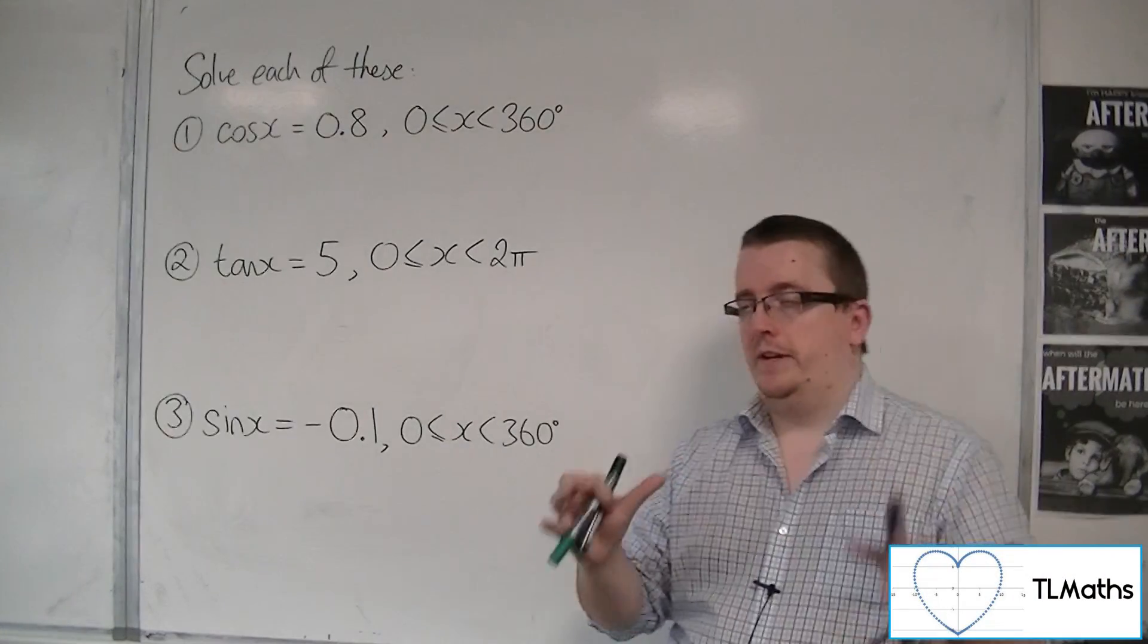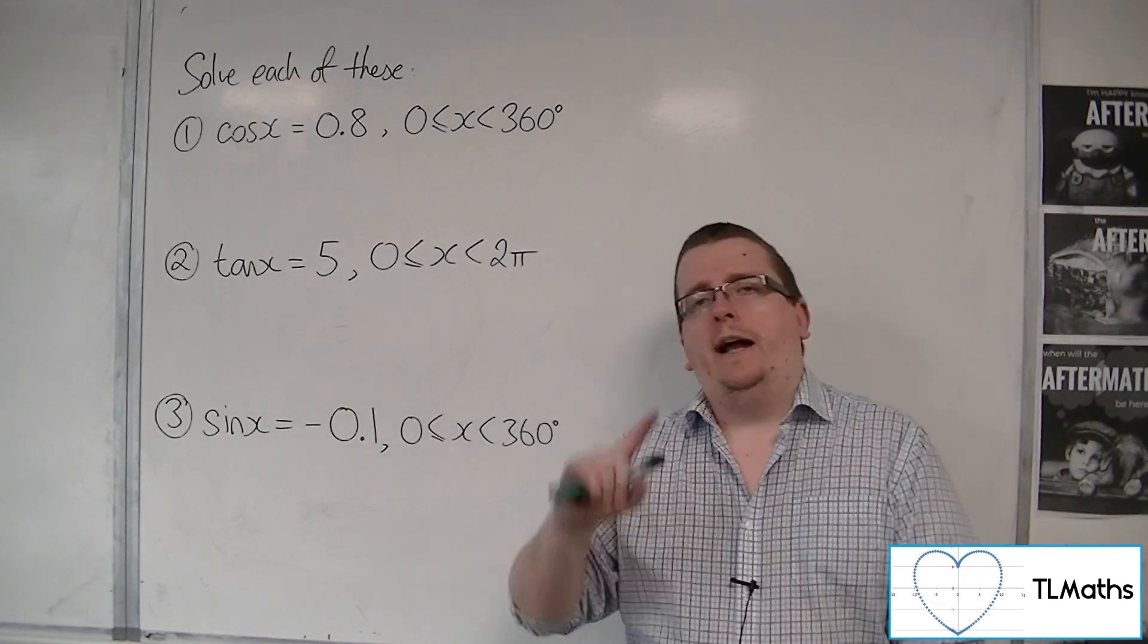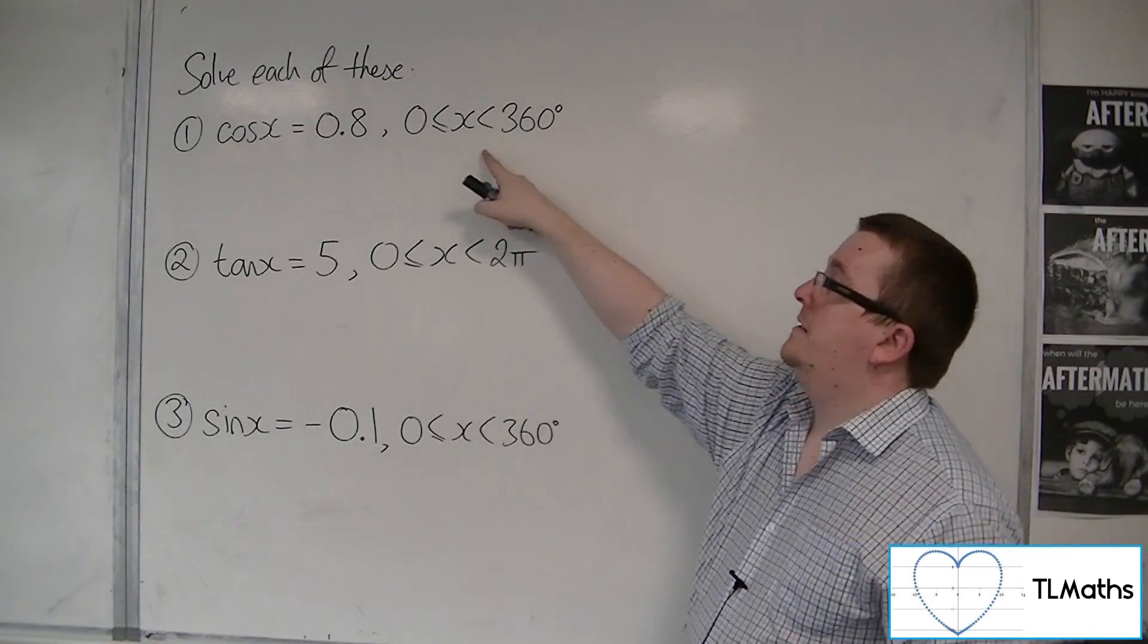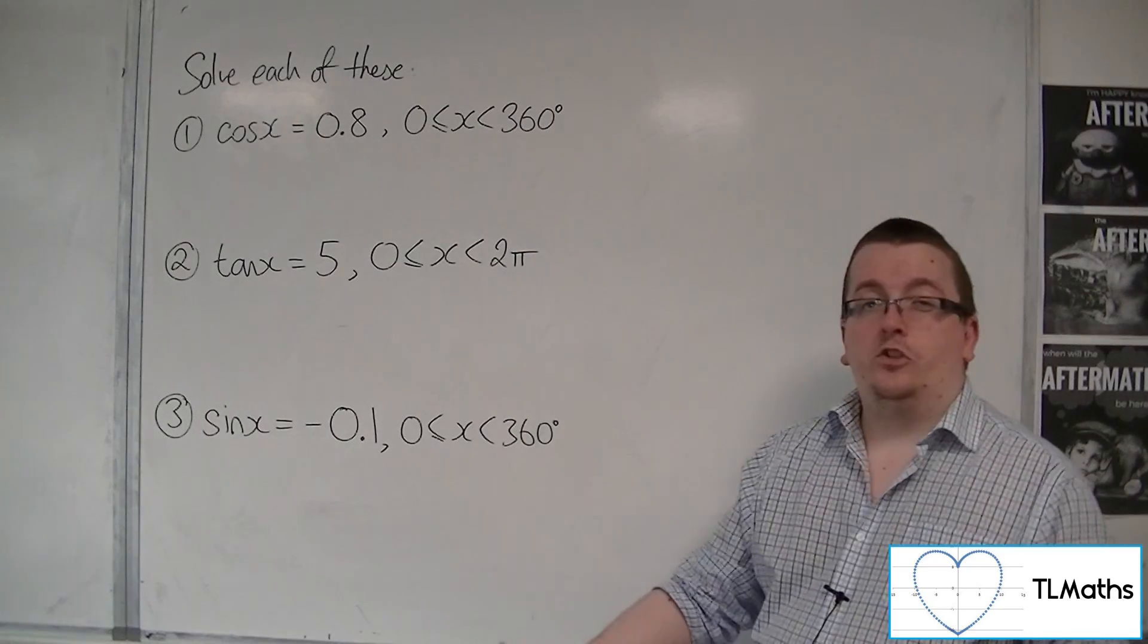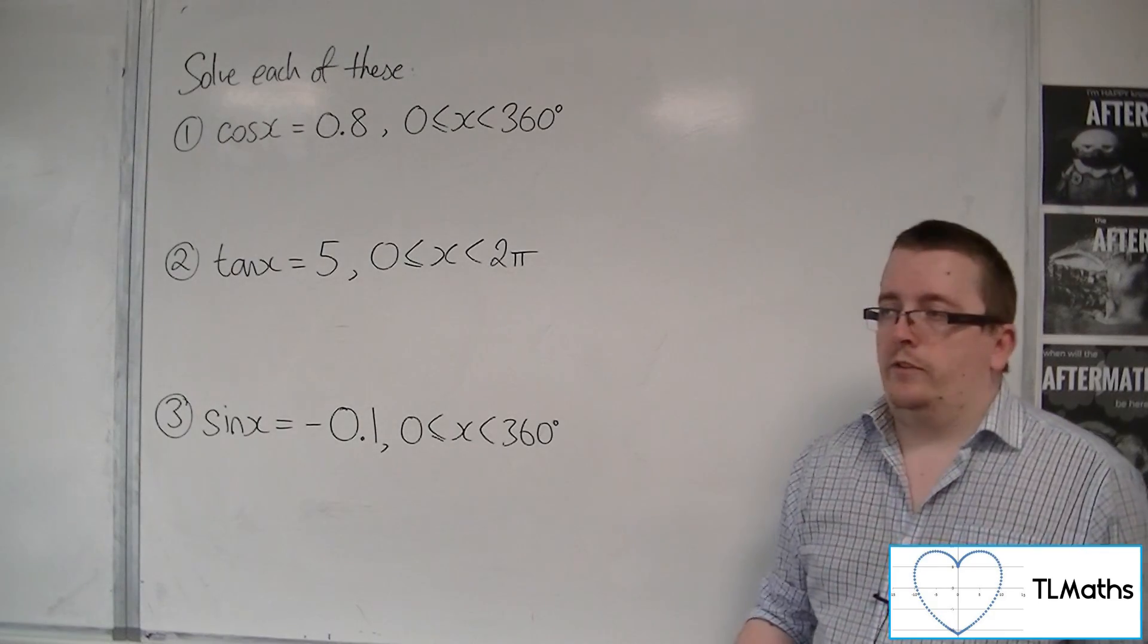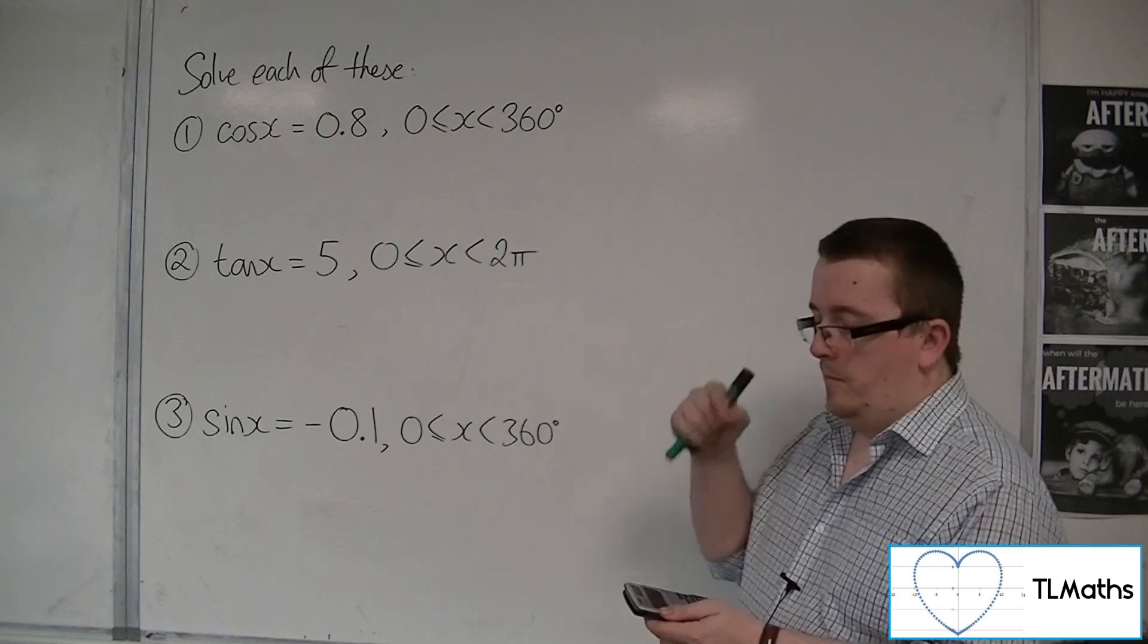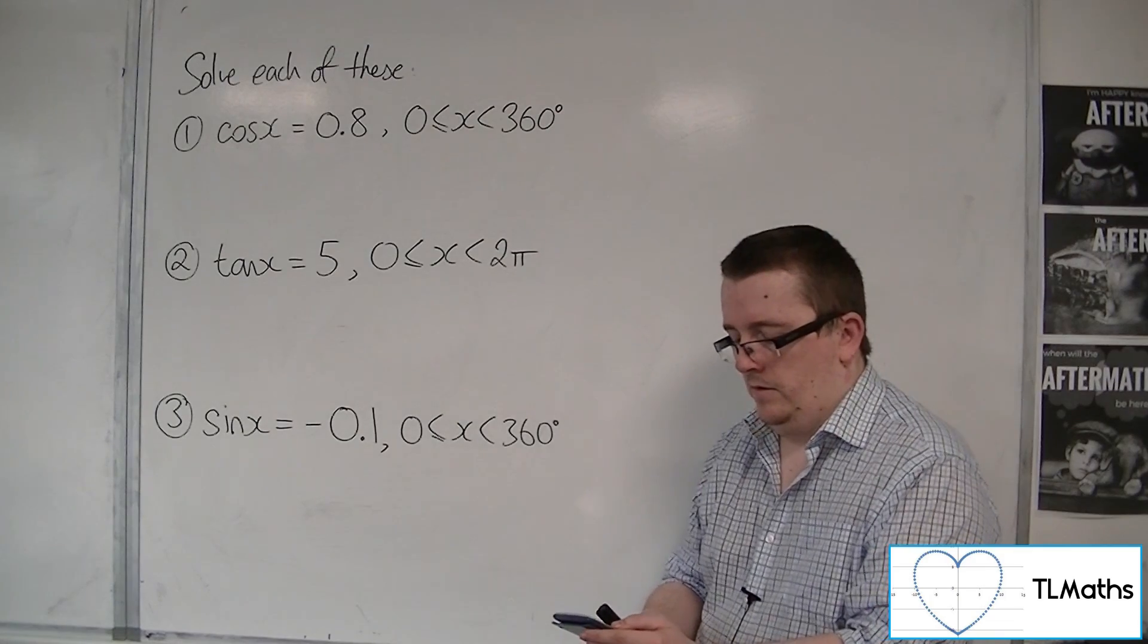The first thing to identify when solving a trig equation is, are we in degrees or radians? You can tell this either with the question or by looking at the range. If it's between 0 and 360 or 0 and 180, it's in degrees. If it's between 0 and π or 0 and 2π, then you're in radians. Make sure your calculator is in the correct mode. Mine's in radians, so I'm going to quickly change it: shift, mode, then number 3 for degrees.